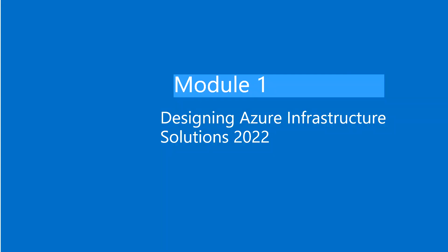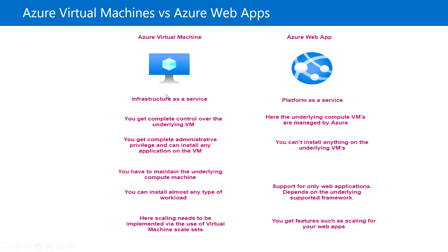Welcome back. In this video we are going to see the first module in AZ-305, the Azure Architect course, which is designing Azure infrastructure solutions. In the first topic we will see the difference between Azure virtual machines and Azure web apps. The Azure virtual machine is an IaaS service — infrastructure as a service — and Azure web app is a PaaS service — platform as a service.